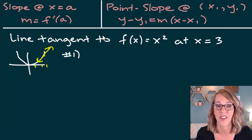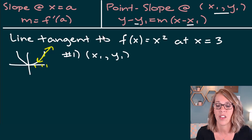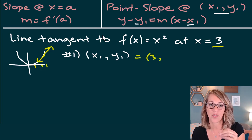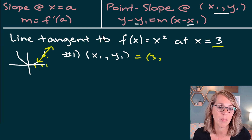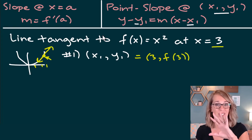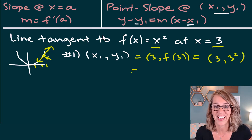Step one is to find your point — specifically x₁, y₁ for the point-slope equation. My x-coordinate is 3, so I need to find the y-coordinate that goes with it. That point is (3, f(3)), which is (3, 3²), giving me the point (3, 9).